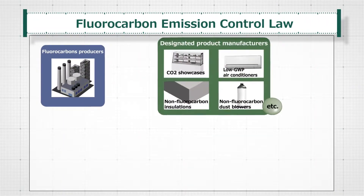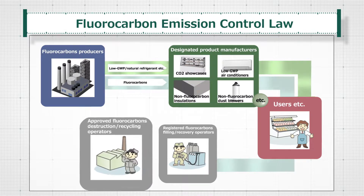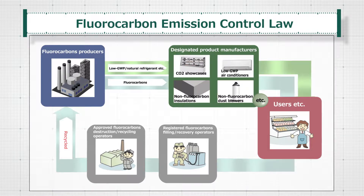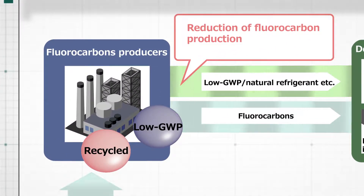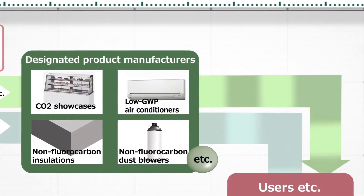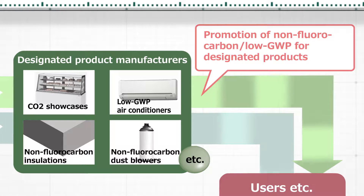In the fluorocarbon emission control law, in order to implement comprehensive measures over the entire lifecycle — from manufacturing to disposal — every stakeholder is required to take measures. Producers are required to reduce the production amount of fluorocarbon by promoting conversion to alternative substances and recycling. Manufacturers of fluorocarbon-contained products, designated by the national government, are required to convert to non-fluorocarbon products or products with low global warming effect.